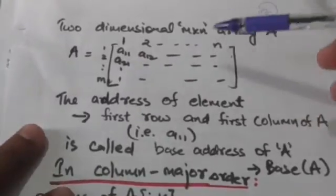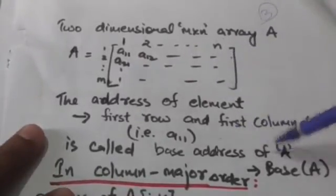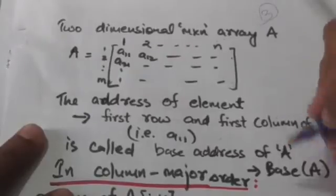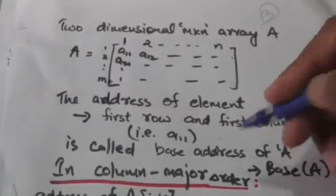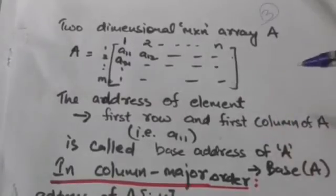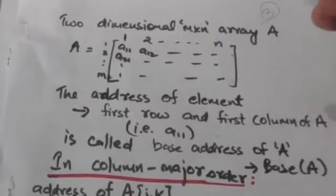If the base address of array A and the number of words per memory location for array A is known, then we can calculate the address of any element of this two-dimensional array A.